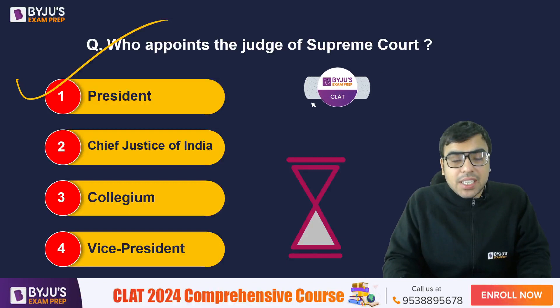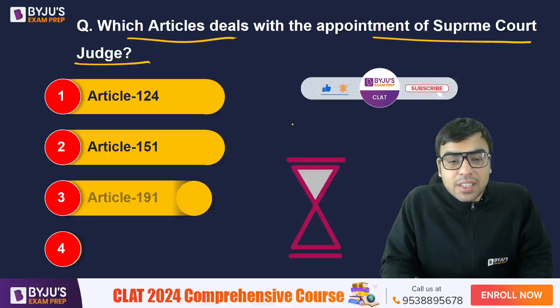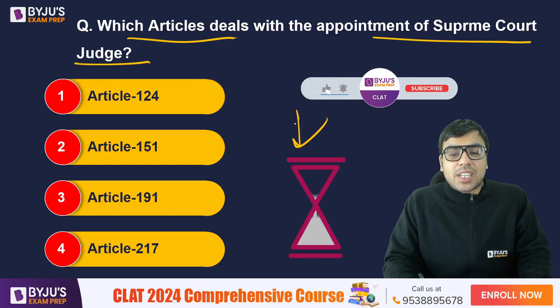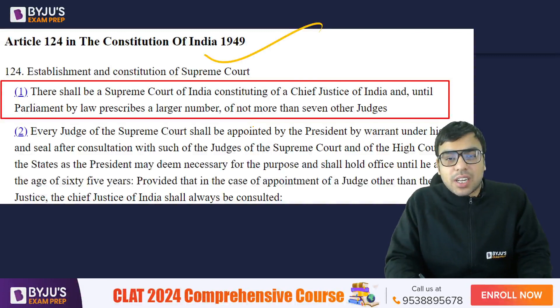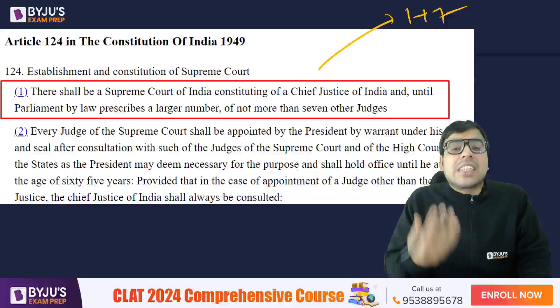Next question: Which article deals with the appointment of Supreme Court judges? Options are: A) Article 124, B) Article 151, C) Article 191, D) Article 217. The right answer is Article 124, which deals with the establishment and constitution of the Supreme Court. It states there shall be a Supreme Court of India consisting of a Chief Justice and not more than seven other judges originally, and that every judge of the Supreme Court shall be appointed by the President of India.